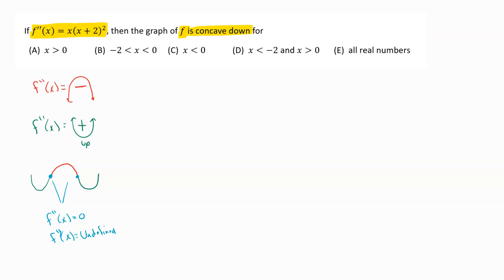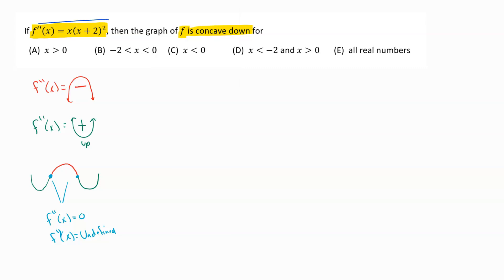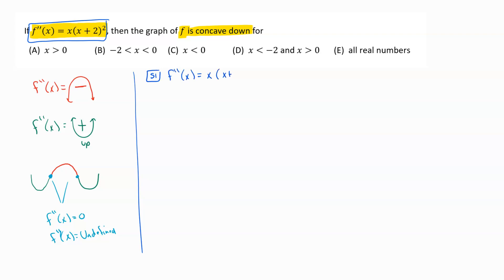Conveniently for us, we are starting with the second derivative information, so we're sort of already at step one of a second derivative test. The second derivative test is always what you want to use when looking to find concavity. Normally step one would be to find the second derivative — well, that's already taken care of for us. So step two is to find those possible inflection points.